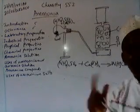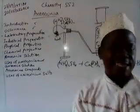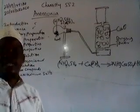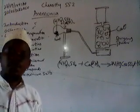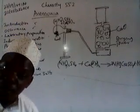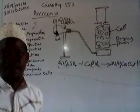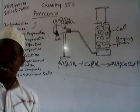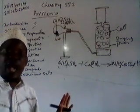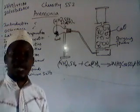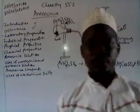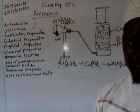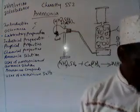The common drying agents we know — concentrated tetraoxosulfate(VI) acid (H₂SO₄), phosphorus(V) oxide (P₂O₅), and fused calcium chloride — cannot be used to dry ammonia because they all react with ammonia. So if you put any of them as drying agents, instead of drying the ammonia they will react with it and form other compounds. So they are not used in drying ammonia.